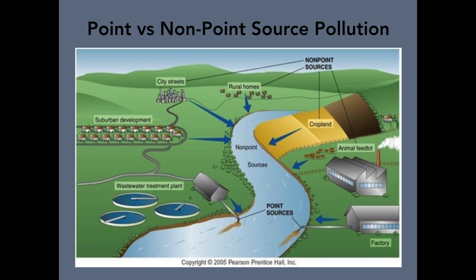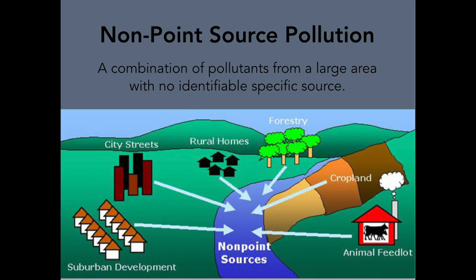Non-point source pollution means you cannot point out where the pollution is coming from. For example, if you throw a soda can on the street, it might blow into the ocean via a storm drain, and if someone sees that can floating in the ocean, they can't figure out where it came from — maybe the street, a neighborhood, or the beach. That's non-point source pollution.